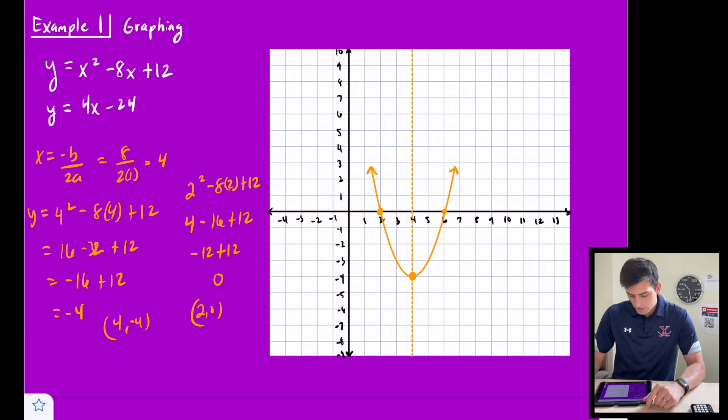And let's graph our linear function now. So we have y = 4x - 24. So typically, I would say begin by plotting your y-intercept. But once again, it doesn't fit on our graph. So what we can do is plot the intercepts, or not the y-intercept, but the x-intercept.